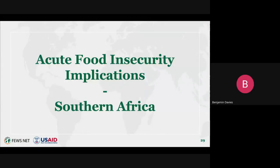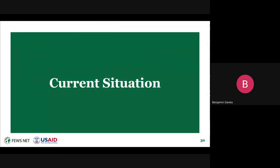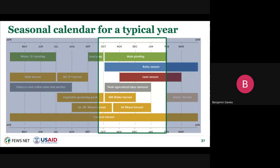Thank you to Tamuka for that great presentation. My name is Benjamin Davies. I'm a senior food security analyst with FEWS NET's early warning team and the regional lead for Southern Africa. I'll be talking about the acute food insecurity implications for Southern Africa. Our current outlook period is September 2023 to January 2024, and overall our level of concern for the impact of El Niño on rainfall and therefore on sources of food and income related to agriculture is currently considered moderate to high in Southern Africa.